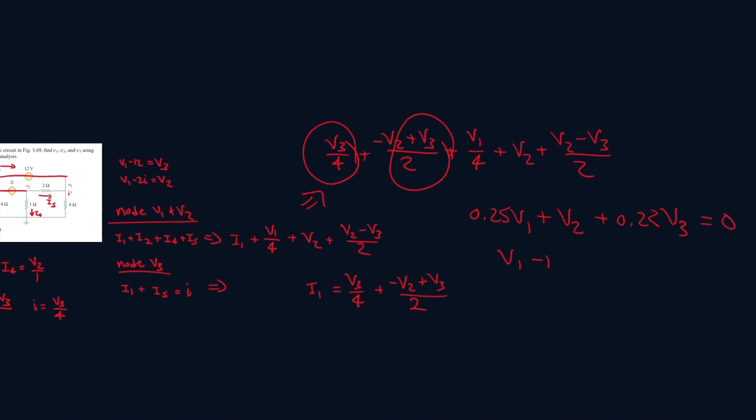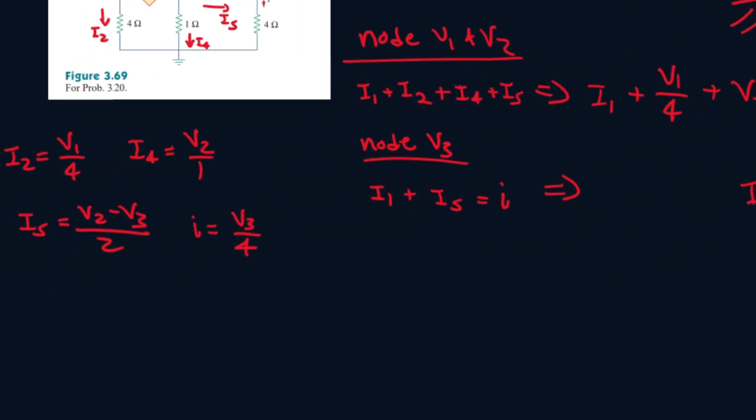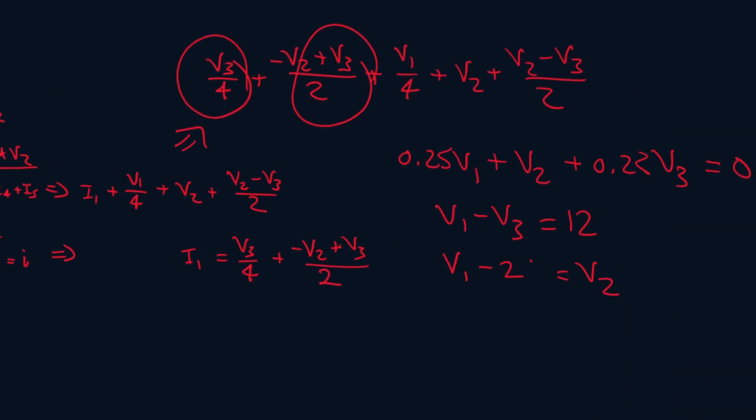So we have v1 minus 12 equals v3. We can swap these two. So we'll have minus v3 equals 12. And then we have v1 minus 2i equals v2. We know what i was. i was v3 over 4. So we'll plug that in here, v3 over 4. And that's just v3 over 2. And let's bring the v2 to the other side. So it'll be minus v2 minus v3 over 2, which is 0.5 v3, and this is 0.